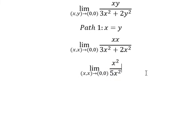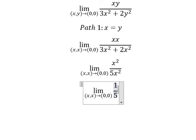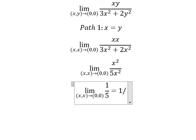Now we simplify x square and x square, and we have 1 over 5. This one is equal to 1 over 5.